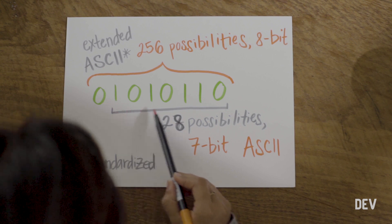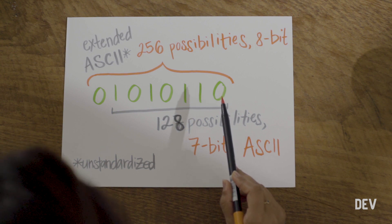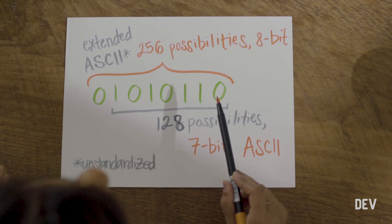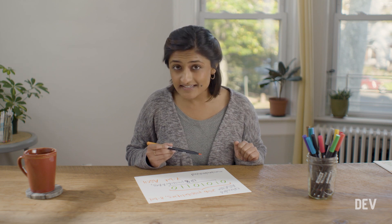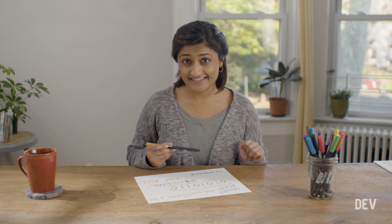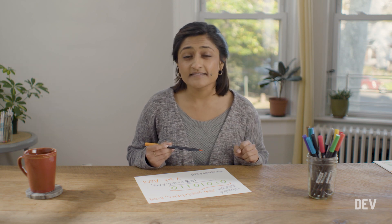Two to the power of seven gives us 128, which means that when you use just seven bits of information, you have 128 different permutations of how you can use zeros and ones in seven single bits. So what happens if you add another bit of information to give us eight bits, or one byte? Well, two to the power of eight is 256 — that's a whole lot more permutations than 128. In fact, it's twice as many. And this was the realization that led to the extension of the original ASCII table.